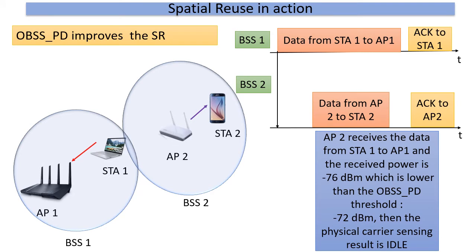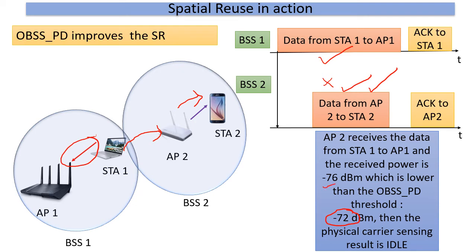This is what spatial reuse tries to achieve. While one BSS is transmitting, as long as the power level seen from that BSS at the other BSS transmitter is low enough, that other BSS can also engage in a parallel transmission. Both of them complete their back-offs, but whereas earlier we would keep silent and wait for the transaction to be over, now we indulge in parallel transmission. In this specific example, our threshold from the other BSS was minus 72 dBm whereas we received minus 76 dBm, and so we could transmit in parallel. Of course, there are lots of questions about how we know this transmission does not interfere — lots of details and configuration possibilities exist in the standard.